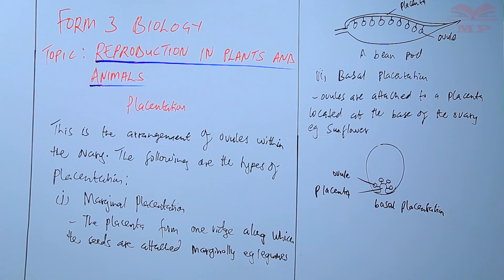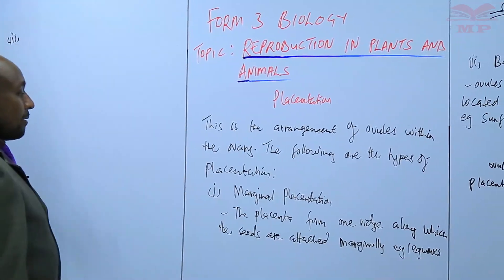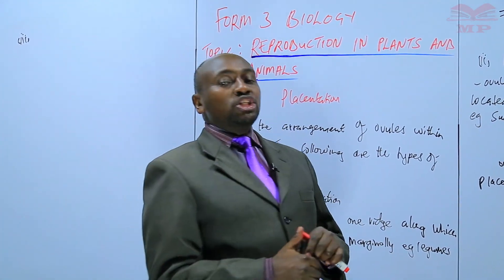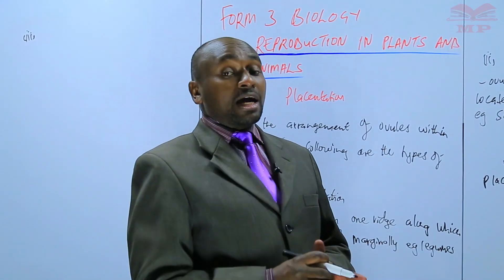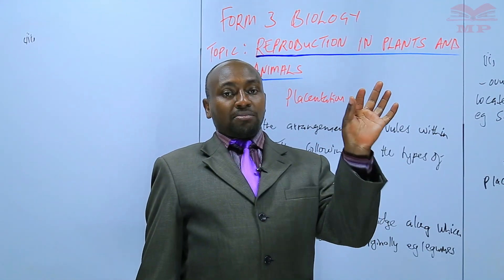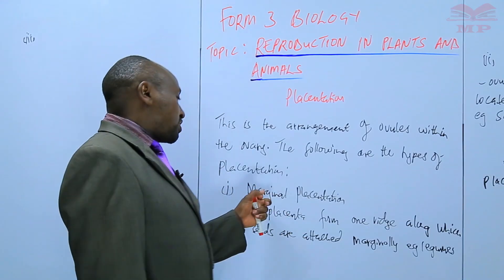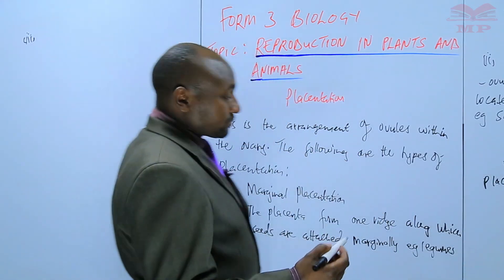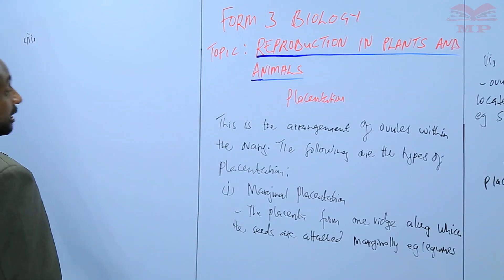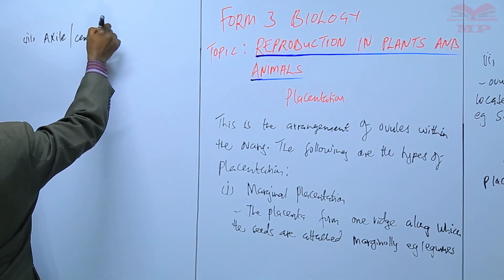The third type of placentation follows from noting that marginal and basal placentation are mainly found in what we call monocarpous gynoecium — those with a gynoecium made up of only one carpel, meaning one ovary, one style, one stigma. For fruits that have a single carpel, they can either have marginal or basal placentation. For those with more than one carpel — the syncarpous gynoecium — they can either be axial, also known as central placentation.